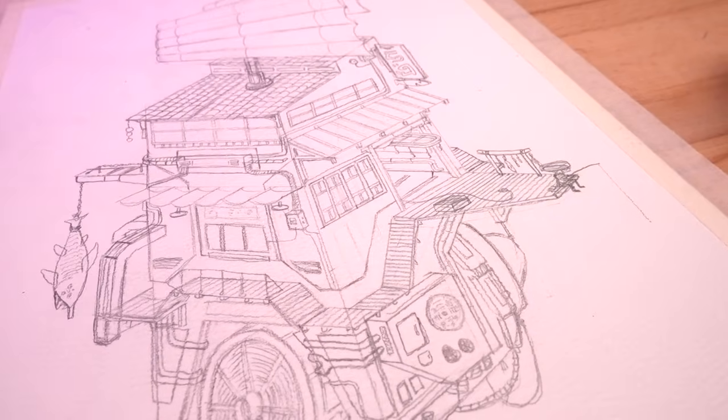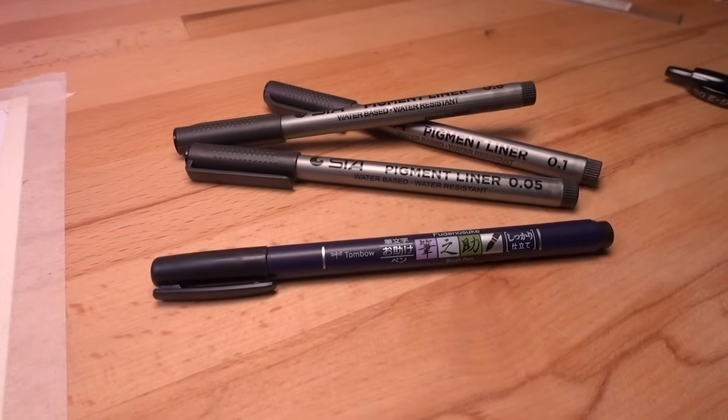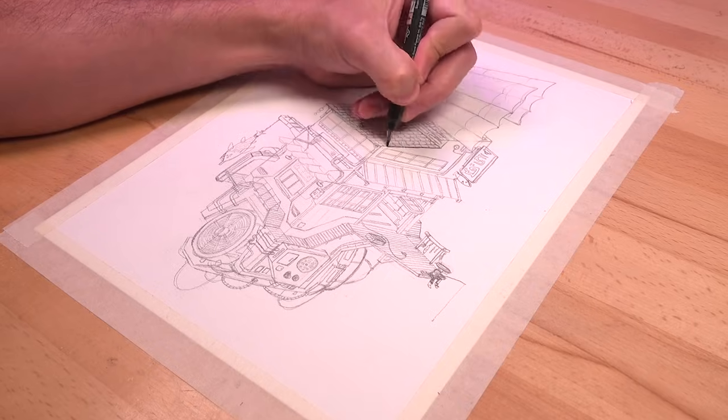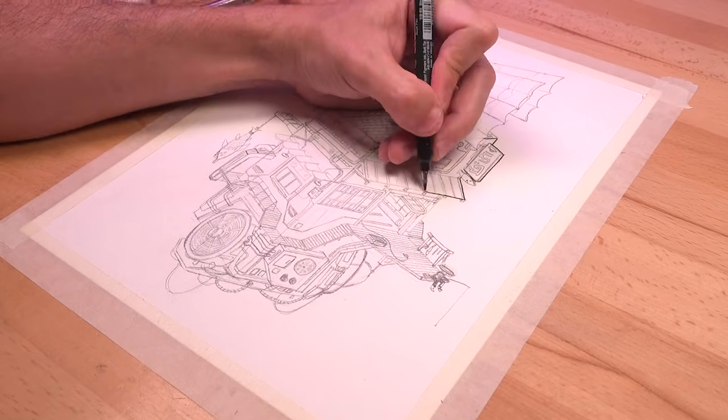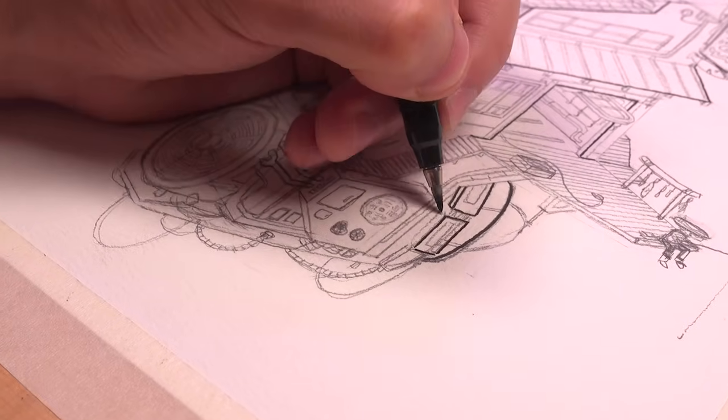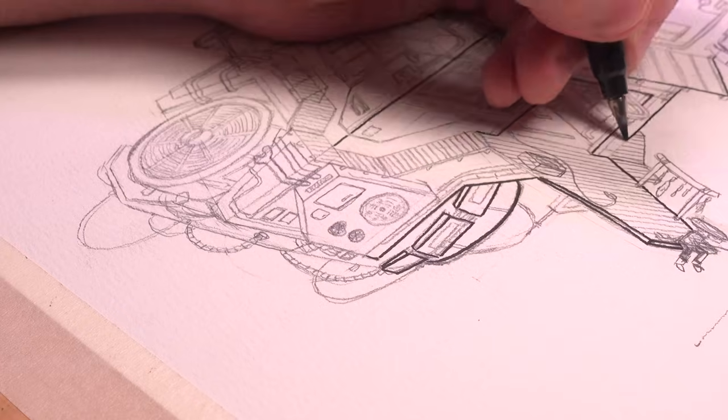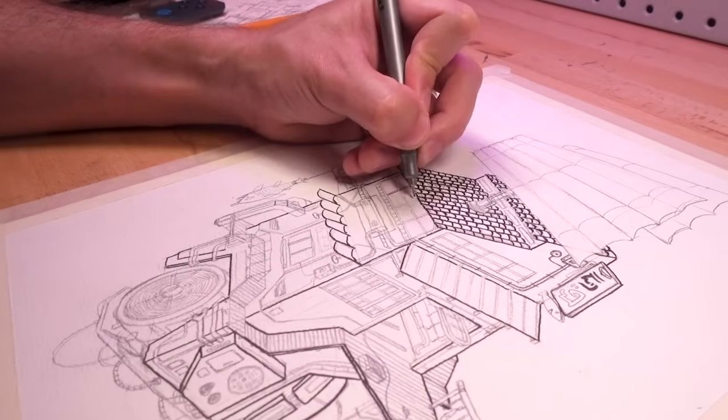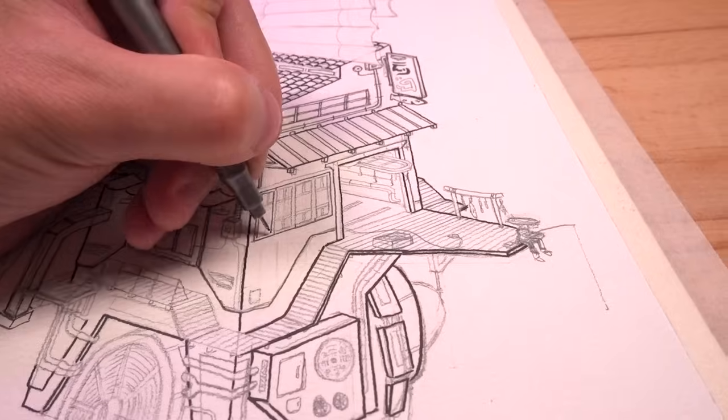With the pencil sketch done, I moved on to the pen work, using these waterproof felt tip pens. I started with a brush tip for the structure's main outlines, then moved on to finer tips for the smaller details like the windows, wood slats, and gratings.